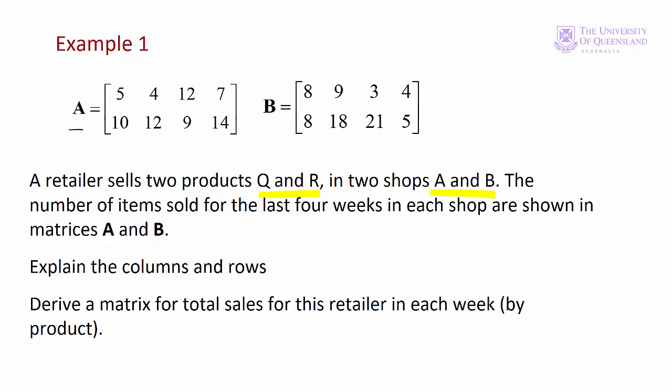The matrices represent the shops. We have two products, Q and R. Those products are represented by the rows. So we'll have Q and R. And then we'll have the sales for each week: 1, 2, 3, 4 for B, and 1, 2, 3, 4 for A.